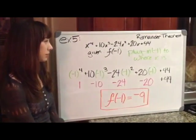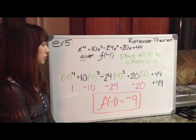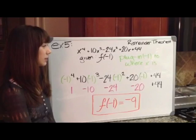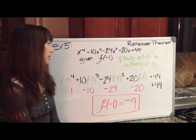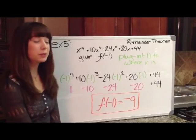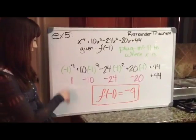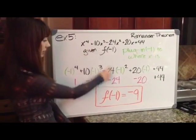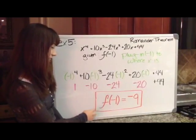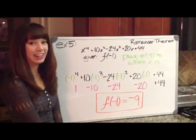Example number 5 is the remainder theorem. And it is x to the fourth power plus 10x cubed minus 24x squared plus 20x plus 44. It is given that f of negative 1, which just means plugging negative 1 to where all the x's are. So we end up plugging in negative 1 to where all the x's are, and then you simplify for each spot, and then you put it all together, and then you get f of negative 1 equals negative 9.